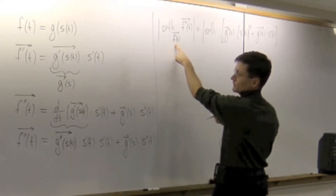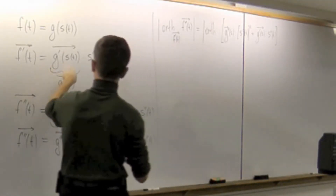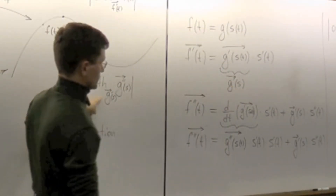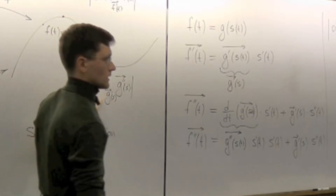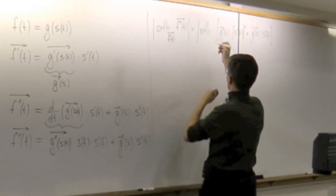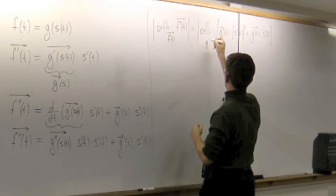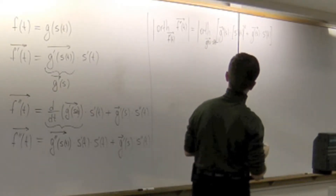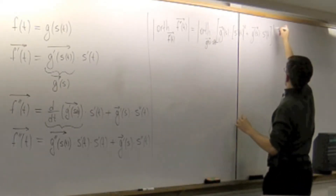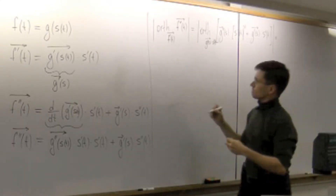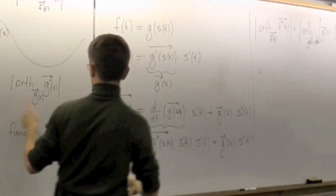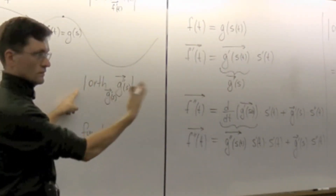Now what about the velocity vector? For the velocity vector, I have a formula relating that vector to the vector I want — to g prime of s — so we can just stick it in. It is g prime of s times s prime of t, and of course the absolute value of the whole thing. So I'm closer to my goal of getting this quantity at the end.